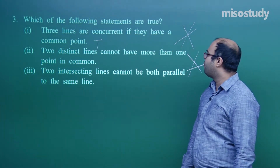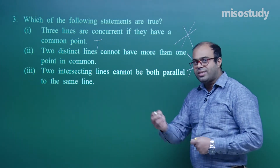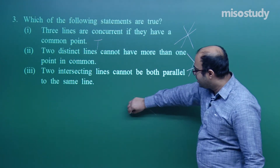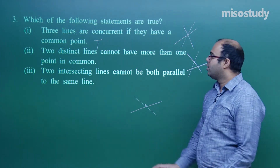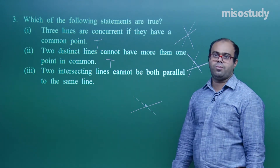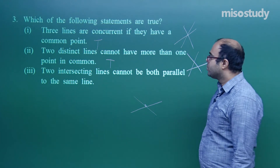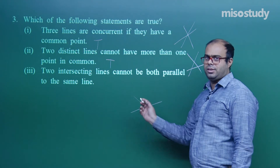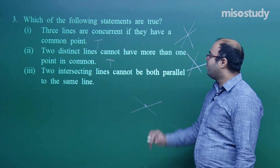Second statement: two distinct lines cannot have more than one point in common. This is true — if we take two distinct lines, there can be only one point which is common to them, not more than one. From one point we can draw infinitely many lines, but no two distinct lines have more than one point in common.